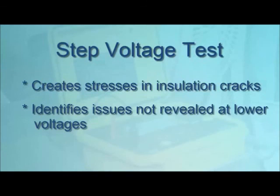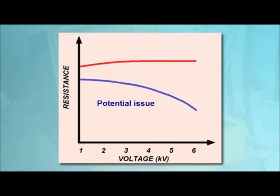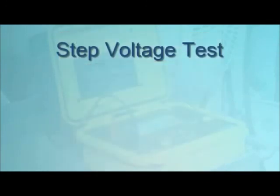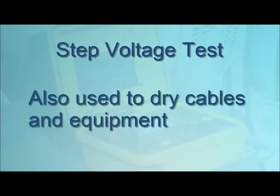Insulation that is thoroughly dry, clean, and in good physical condition should provide roughly the same resistance measurement across the voltage range. If instead you observe a significant decrease in resistance at higher voltages, your insulation may be contaminated or deteriorating. Step voltage testing is also often used as a way to dry wet cables or equipment — gradual voltage steps, applied for increasingly longer durations, can facilitate drying through heating.